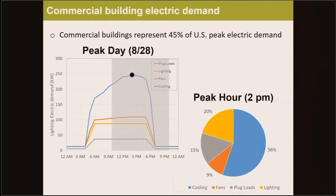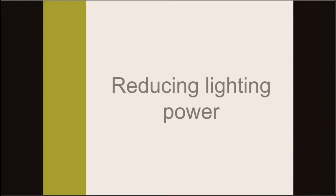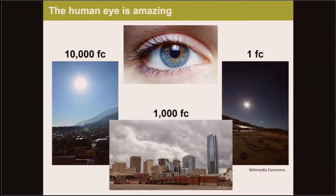A nice side effect of reducing lighting power is that cooling load is reduced as well, usually between 10% and 20% increase in the total reduction. Now, the main question is whether there's anything we can do to reduce lighting power. We could turn out all the lights, but unfortunately we need those lights to do our jobs. So lighting power and the available light, or illuminance, are essentially linearly related, which means we first have to understand more about how our eyes work and how much light we actually need.